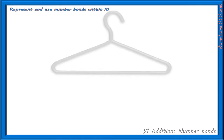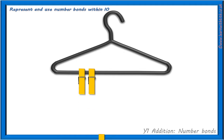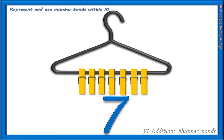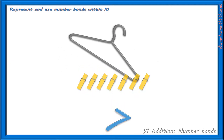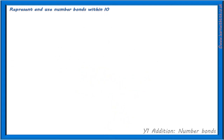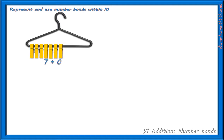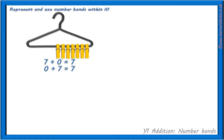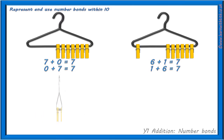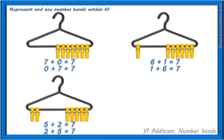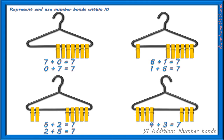What sums can you make with 1, 2, 3, 4, 5, 6, 7 pegs? With 7 pegs, we discovered: 7 add 0 equals 7, 0 add 7 equals 7, 6 add 1 equals 7, 1 add 6 equals 7, 5 add 2 equals 7, 2 add 5 equals 7, 4 add 3 equals 7, and 3 add 4 equals 7.